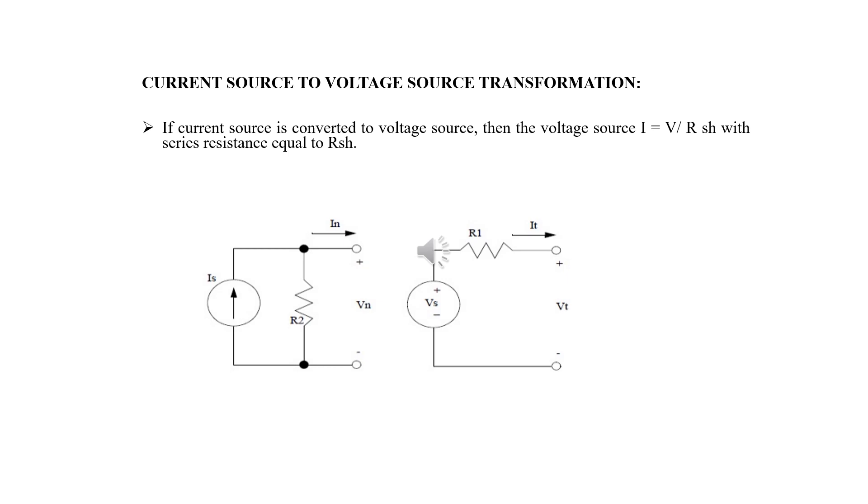If current source is converted to voltage source, then voltage source V is equal to I into RSH with series internal resistance equal to RSH.